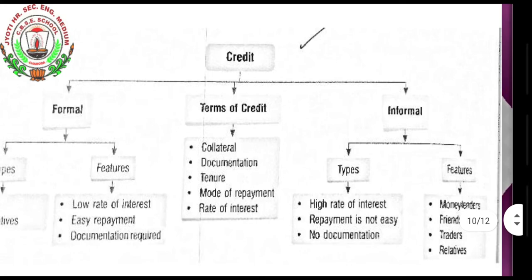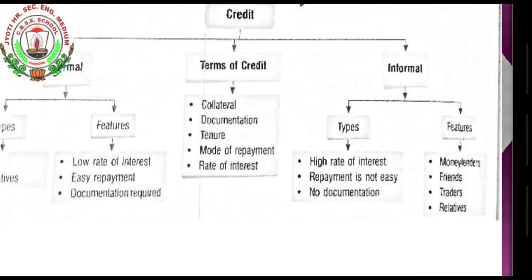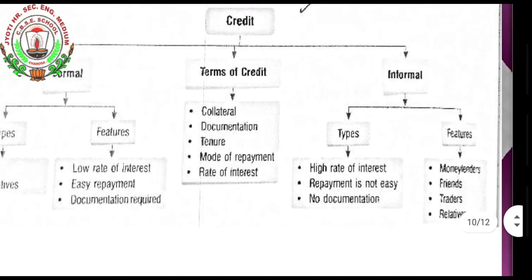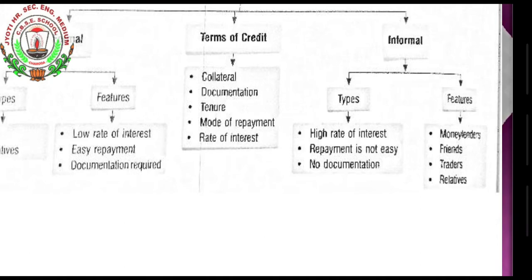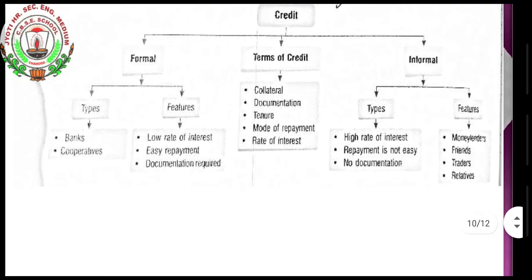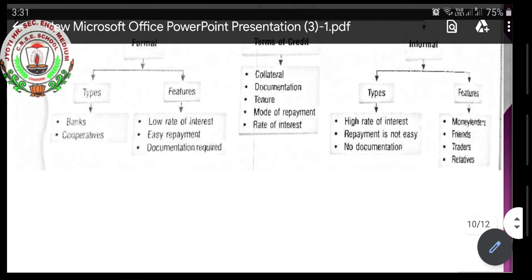Informal credit sources include moneylenders, friends, traders, and relatives. Their features are high rate of interest, repayment is not easy, and there is no documentation. In formal credit there was a low rate of interest, but in informal credit the rate of interest is high. From these sources, we have to borrow money at a high rate of interest.